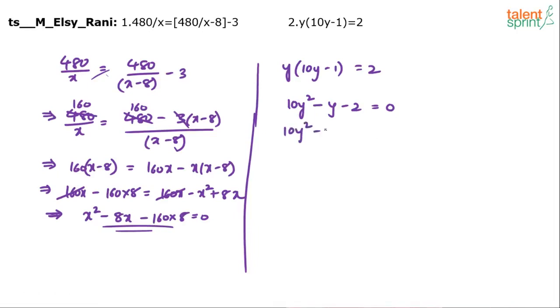This is simple. 10y squared minus 5y plus 4y minus 2 equals 0. So 5y into 2y minus 1 plus 2y minus 1. So y is either 1 by 2 or minus 2 by 5.